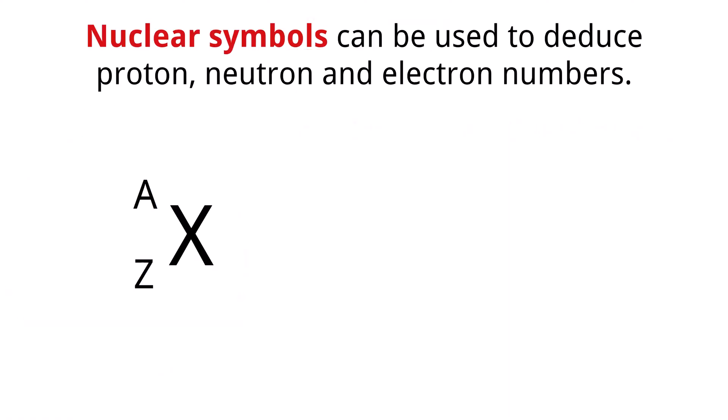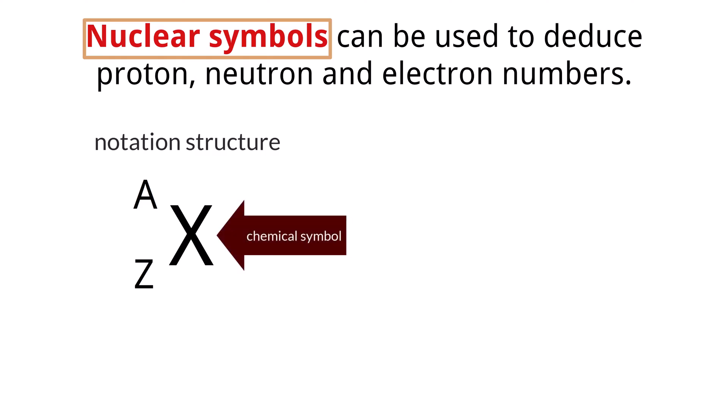All atoms are built on the same building blocks of protons, neutrons, and electrons. And to notate the information of how many of these components are within a specific atom, chemists use the nuclear symbol notation. Let's break down the pieces. The large text in the middle is the chemical symbol of the element that is defined by one or more letters. Each element that we know of has its own chemical symbol. Carbon, for example, has a chemical symbol of C.